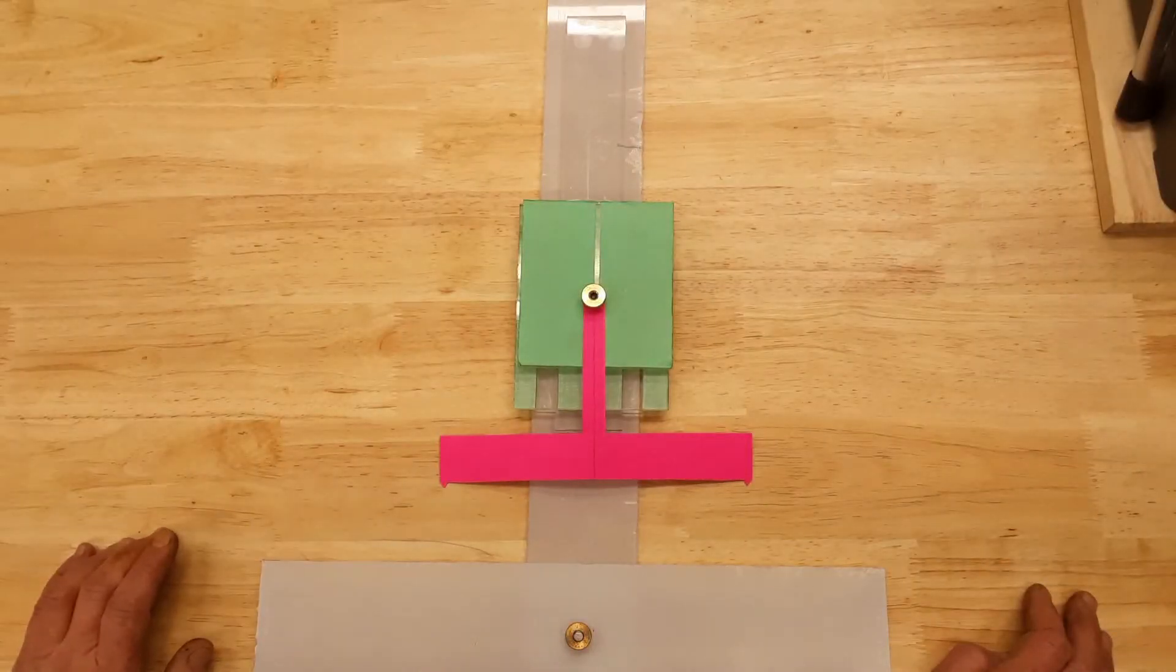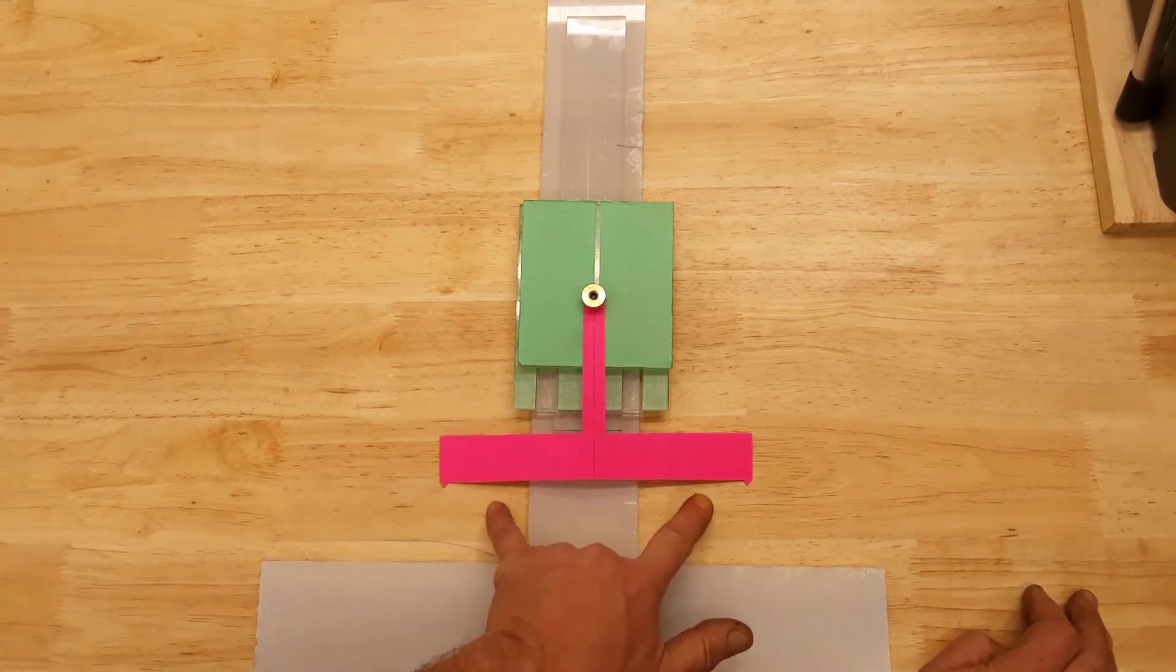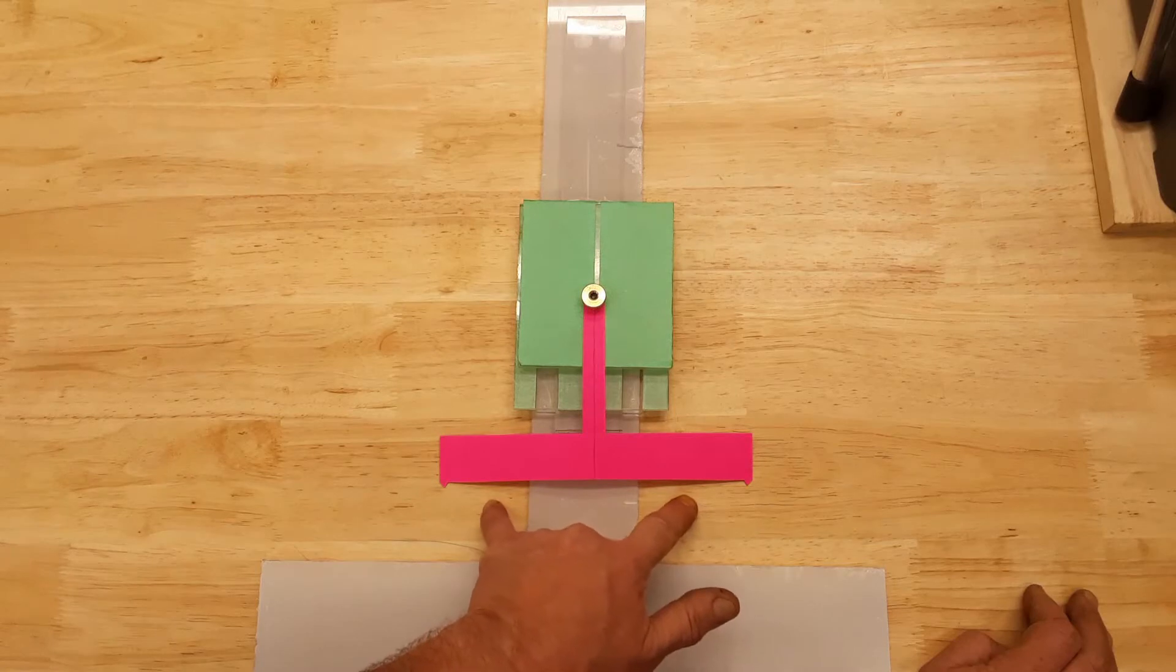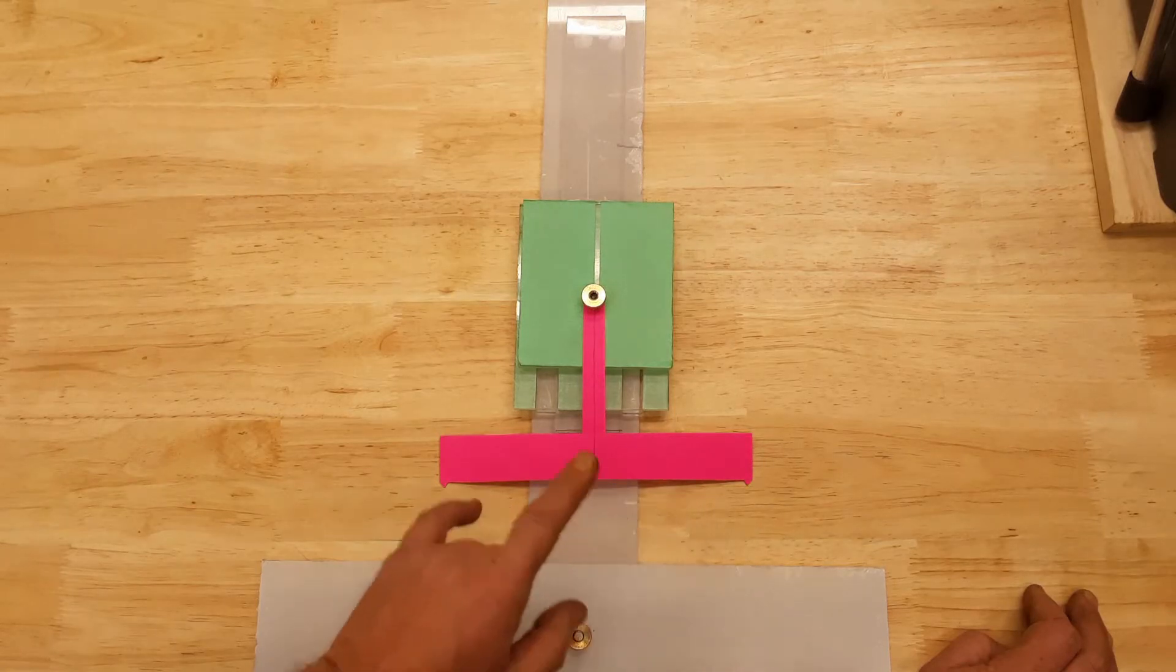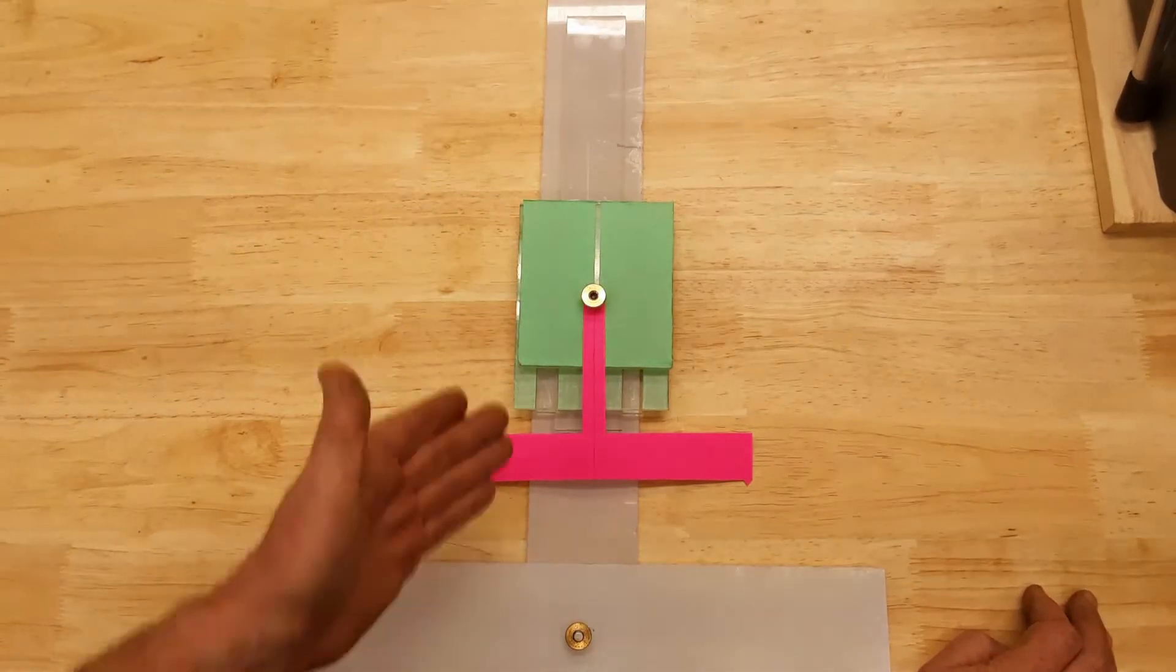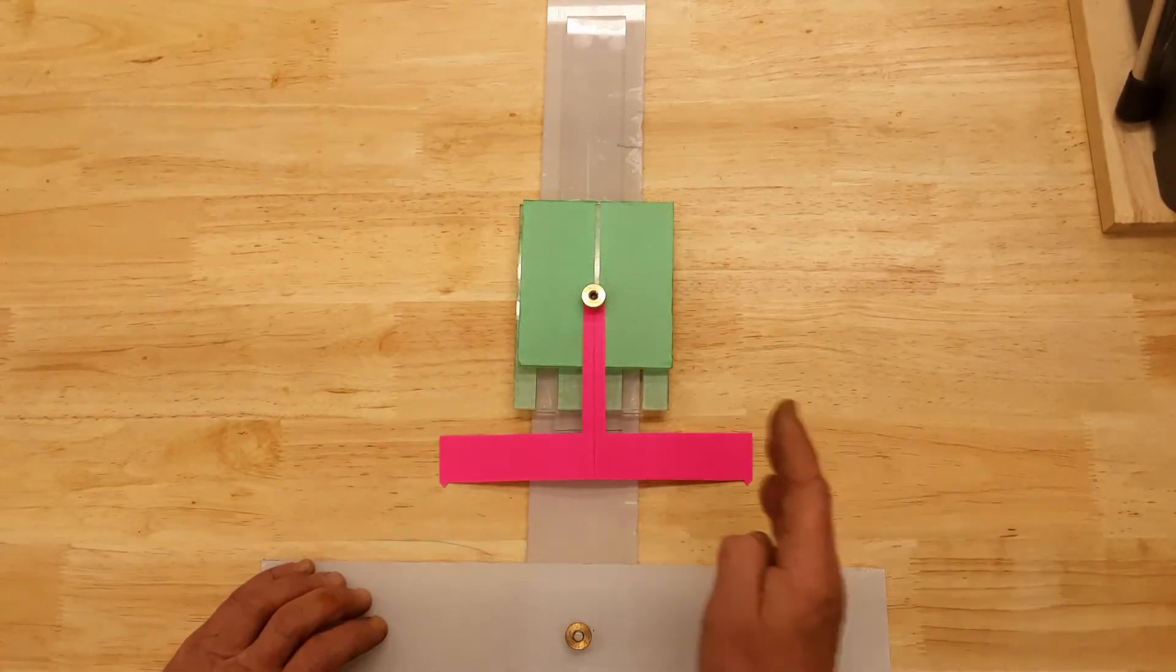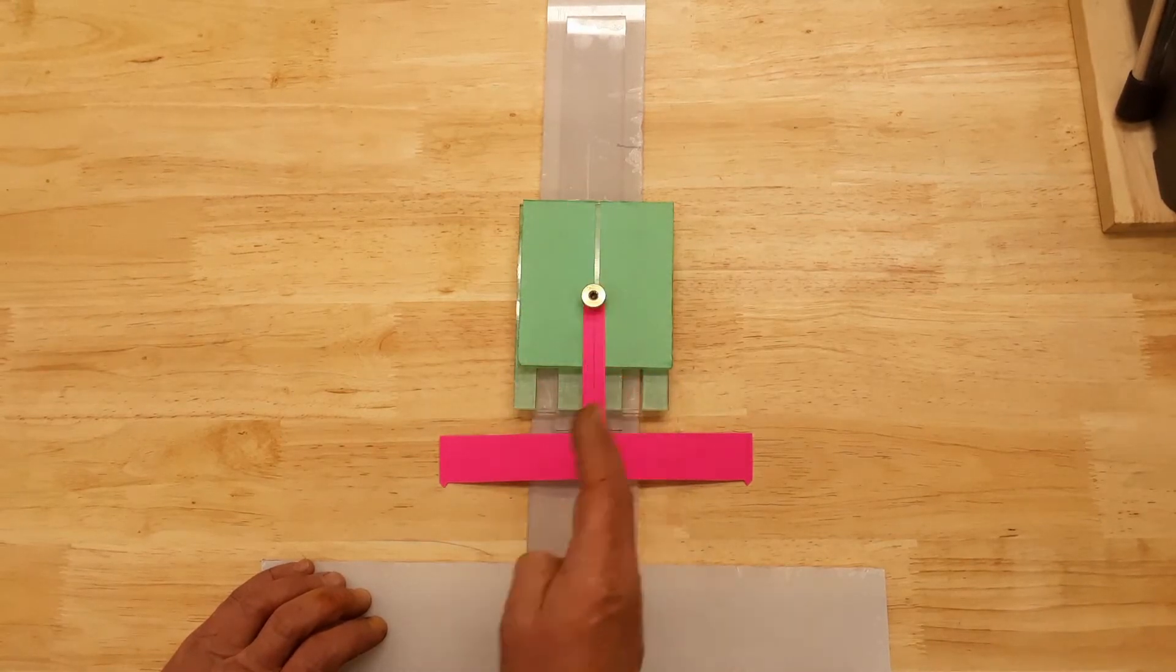But there is one small detail. As soon as we have the same readings in the left and in the right, we cannot say that our column is perpendicular to the table—we only have the spindle axis perpendicular.